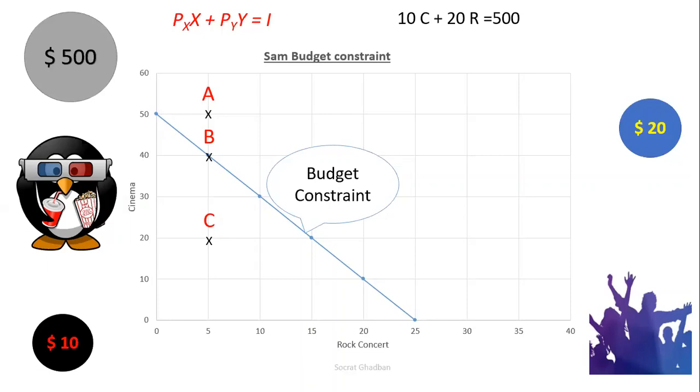So this is why the triangle, the blue triangle that we have in front of us, represents the choice set or opportunity set. It's the set of options that is defined and limited by a budget constraint.